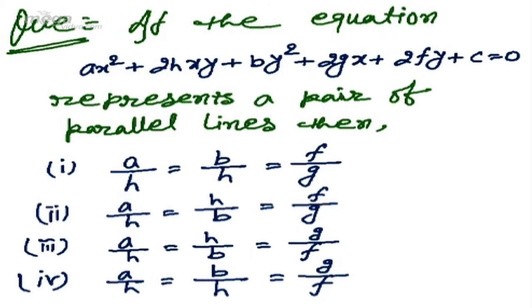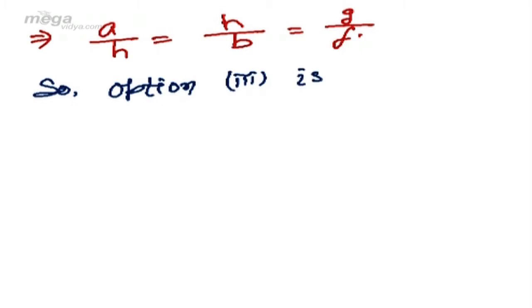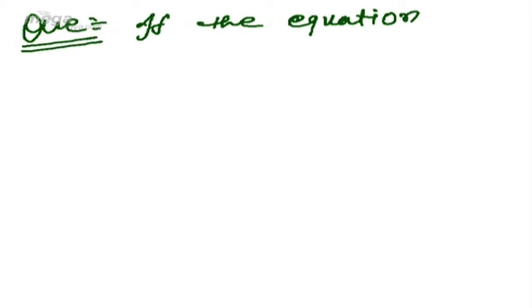Hence we can write a/h = h/b = g/f. Comparing with the given options, option 3 is the correct answer: a/h = h/b = g/f. Now moving to the next question.